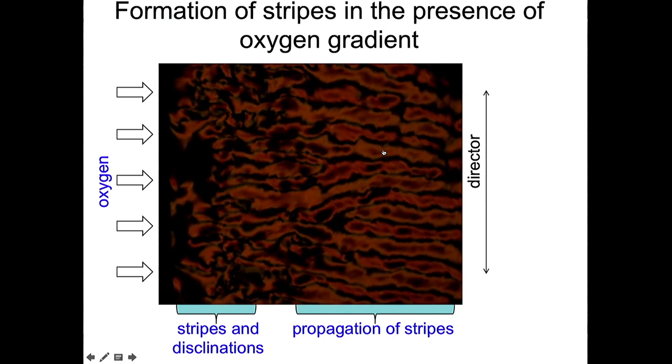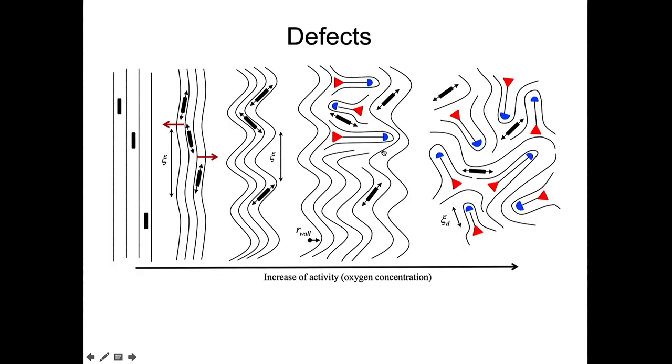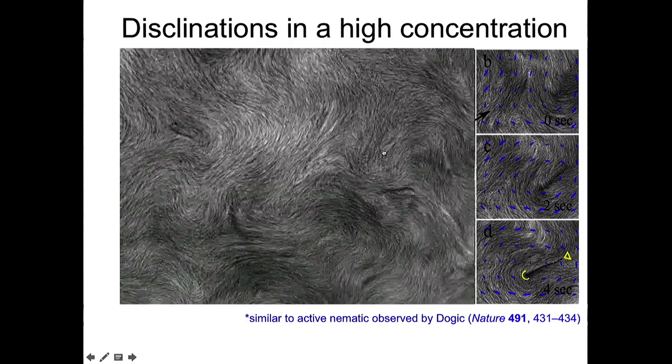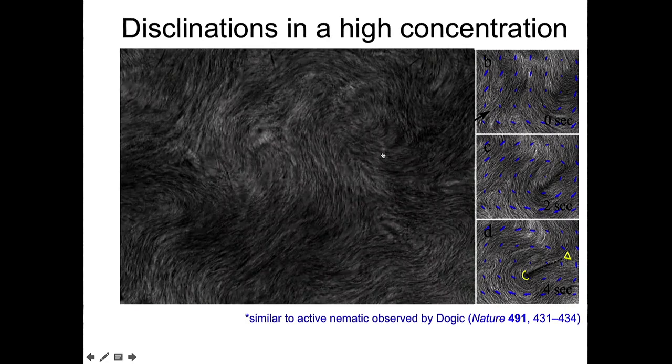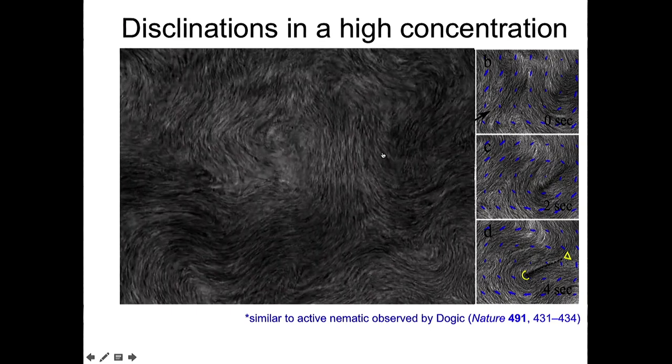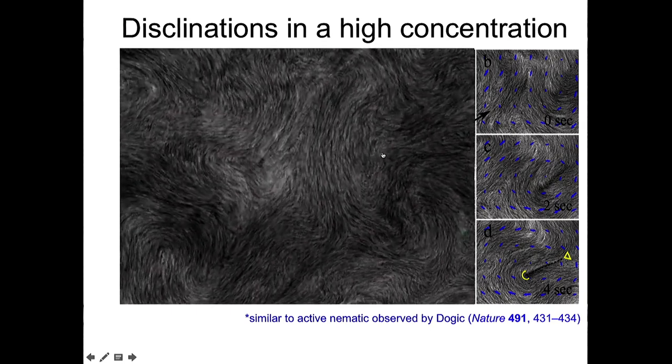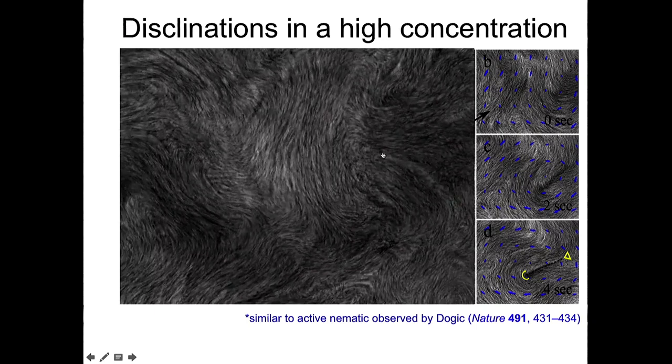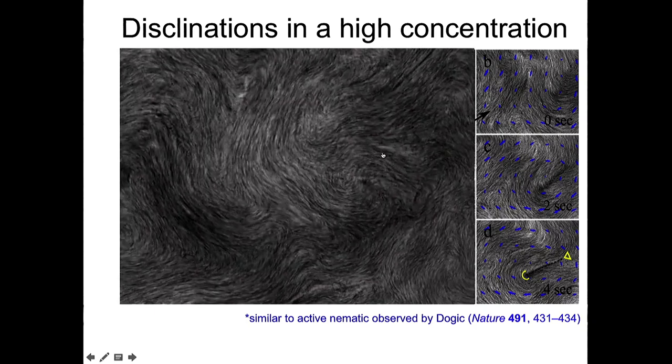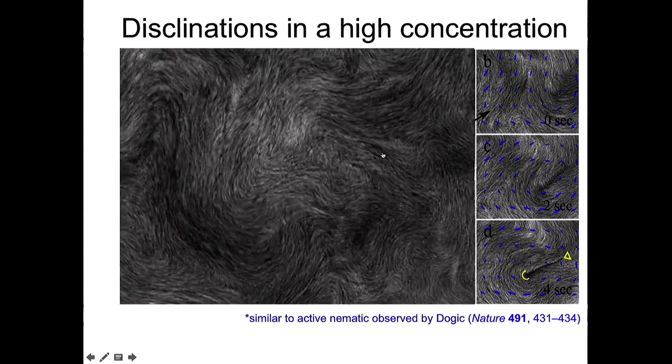So if you continue to increase the activity of the bacteria or concentration of bacteria, you can create like a turbulent motion like in this movie. So it's very similar to what I showed you on the first slide, but now it's a little bit slower.